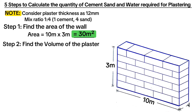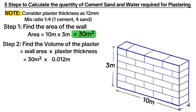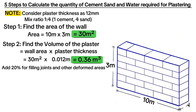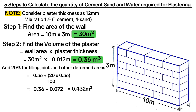Step 2 is to find the volume of the plaster, that is area multiplied by thickness. This equals 30 m² multiplied by 0.012 meters, giving a plaster volume of 0.36 m³. Adding 20% for filling joints and other deformed areas on the wall gives a total of 0.43 m³. Remember, this is wet volume — this is what we exactly cast on the wall.